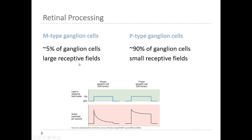The size of the receptive field is larger in M-types versus P-types, again because of the distribution of their dendrites.